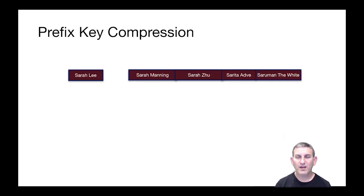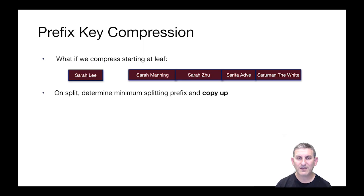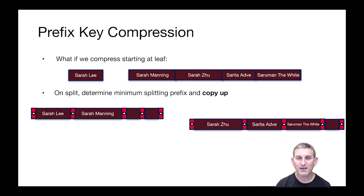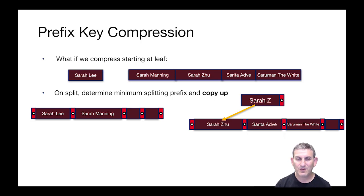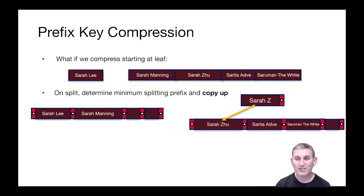The truth is we don't really have to think about this trade-off, because the way we're going to achieve prefix key compression in practice in a B+ tree is during page split at the leaf level. Here's an example of a leaf level page on the right and a new tuple to be entered that's going to cause the page to split. On split we need to determine the minimum splitting prefix and copy it up. We're going to get Sarah Lee on the left with Sarah Manning, and Sarah Zhu, Sarita Adve, and Sarum on the right. The split key is Sarah Zhu, but what we can do is take the minimum distinguishing prefix of Sarah Zhu with respect to the tuples on the right — that's Sarah Z, because it differentiates from Sarah Manning on the left. Now and forever, anything greater than Sarah Z goes on the right, which includes things like Sarah Zap. So it's a little different than copying the whole key up, but it works just fine, and from now on Sarah Z is the split key.